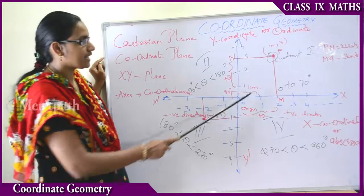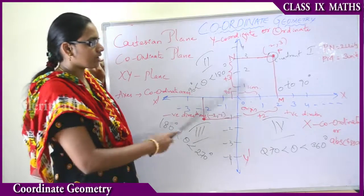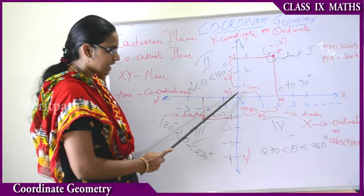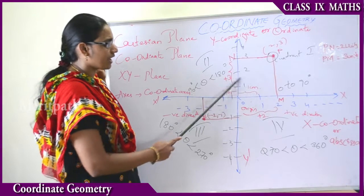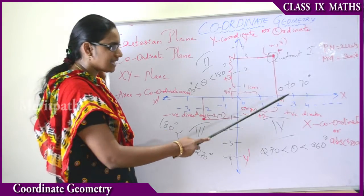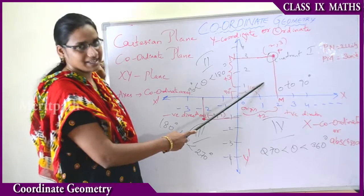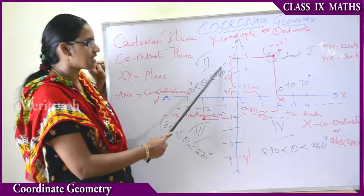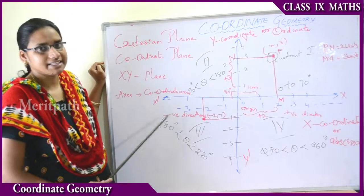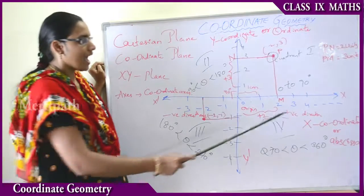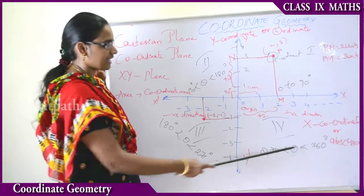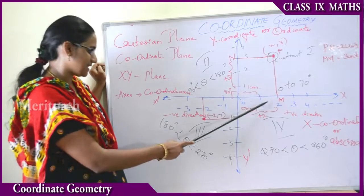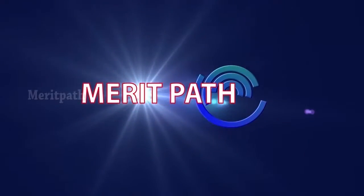One more important point: we have to measure the angles of the quadrants. The total four quadrants equal 360 degrees. The first quadrant covers 0 to 90 degrees — any angle theta in the first quadrant satisfies 0 less than theta less than 90 degrees. In the second quadrant, theta lies between 90 and 180 degrees. In the third quadrant, theta lies between 180 and 270 degrees. In the fourth quadrant, theta lies between 270 and 360 degrees. The sum of all quadrant angles equals 360 degrees.